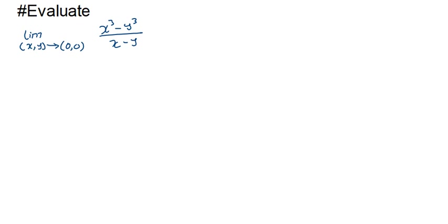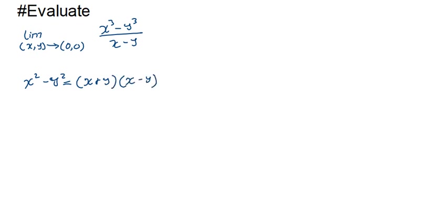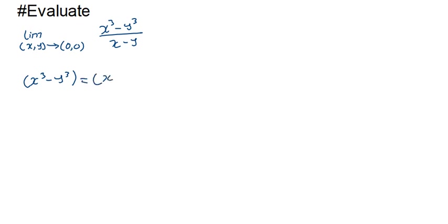To handle this, recall the difference of cubes identity: x³ − y³ = (x − y)(x² + xy + y²). This is similar to the difference of squares, where x² − y² = (x + y)(x − y). We'll substitute this factored form instead.